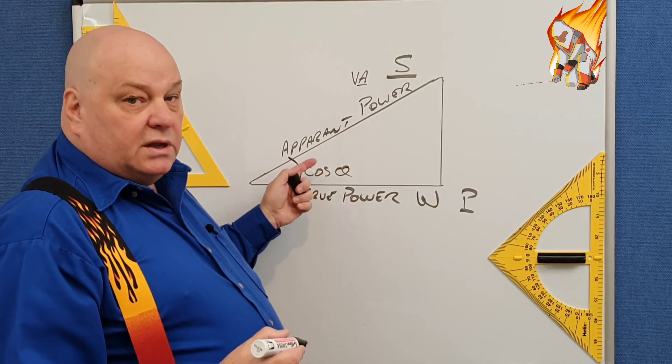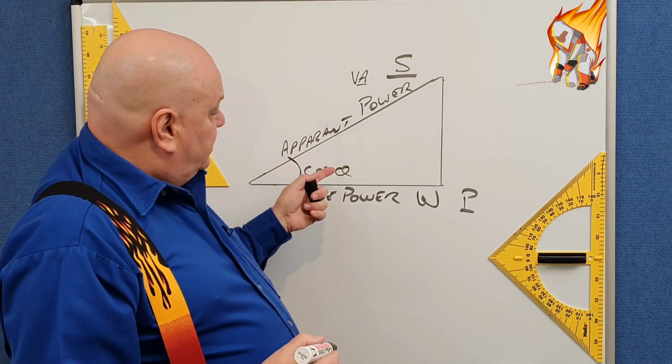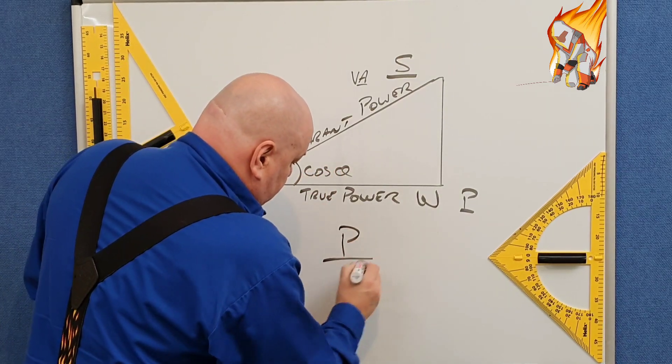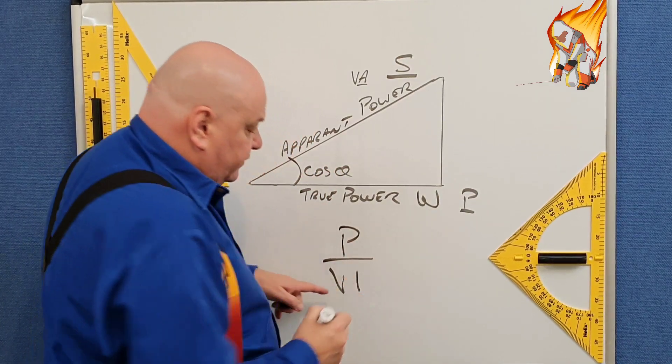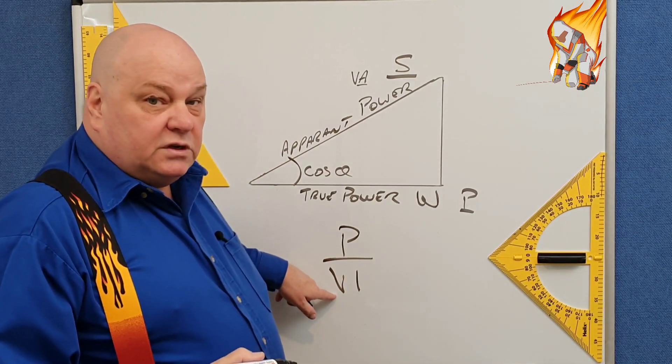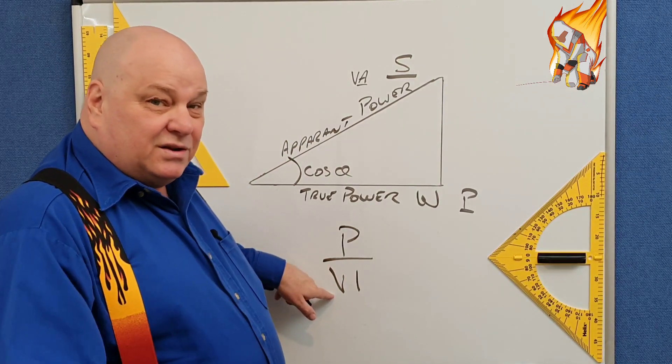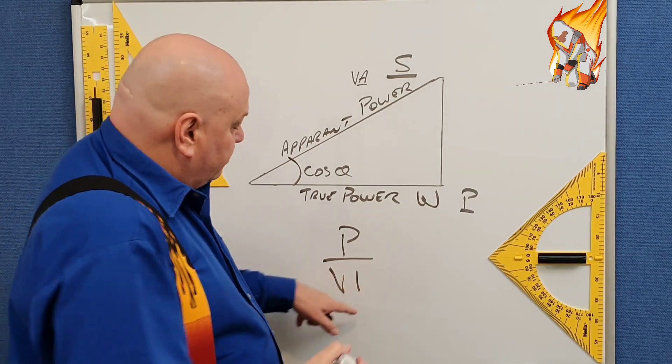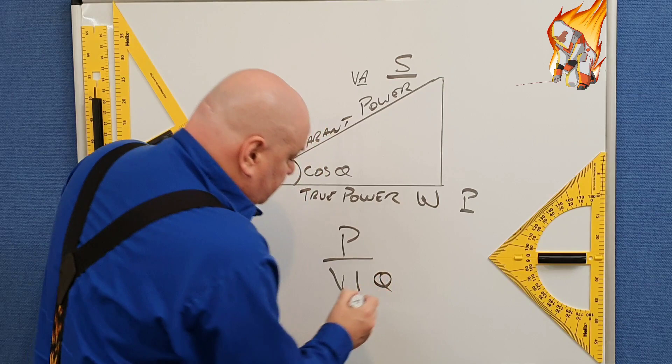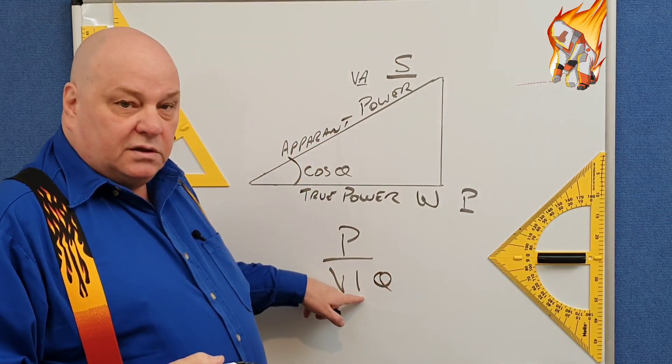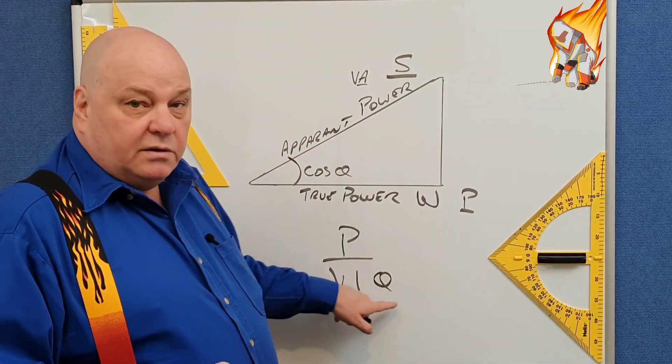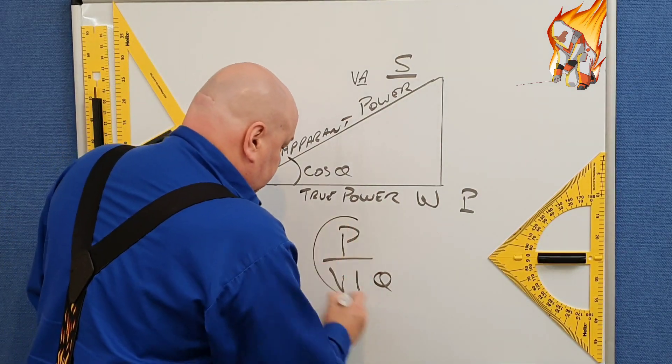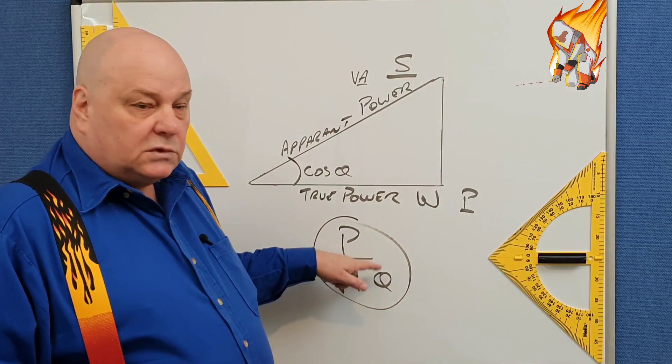And you might remember in your formulas that power equals VI, remember that from first year. But then in second year, when you got into AC power instead of DC, then you also had theta there. So it was voltage times current times theta gave us power, which is true power.